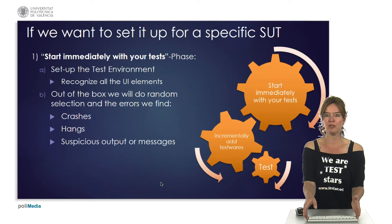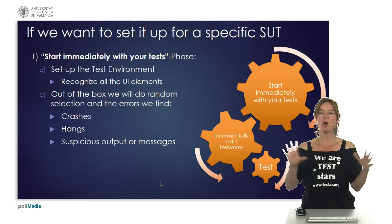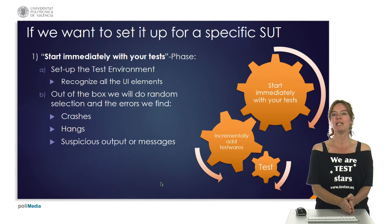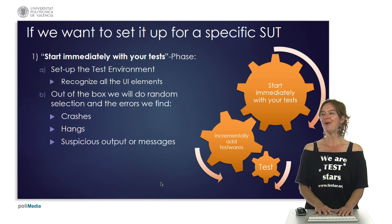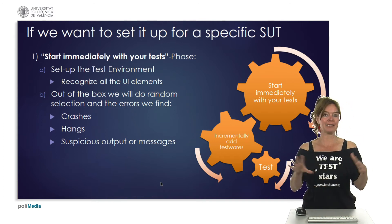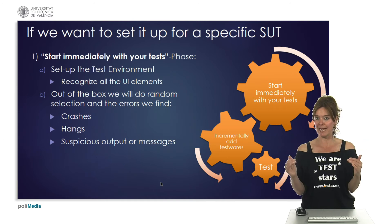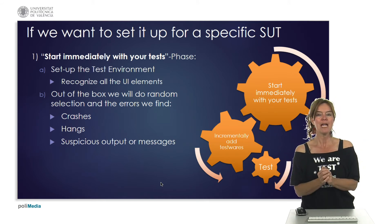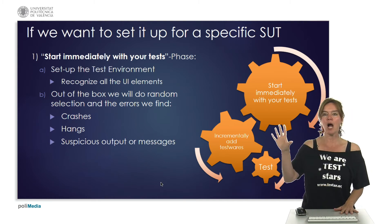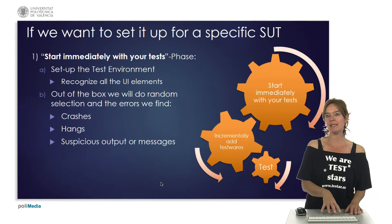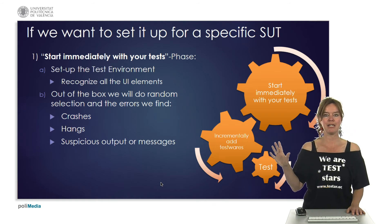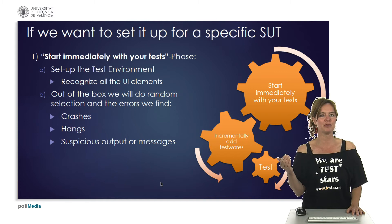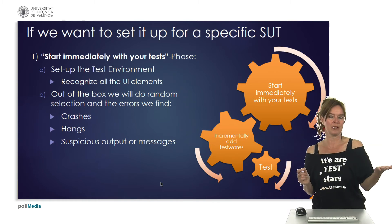Imagine we have a system under test. We can divide the process of setting up Testar into three steps. We start immediately with the test phase: we set up the test environment, recognizing all user interface elements through the accessibility API of the operating system. We can already start testing out of the box with random selection and implicit oracles for crashes, hangs, and suspicious titles. In this first phase, we make sure everything is detected and filter out actions we don't want to execute, like minimizing or closing the application.